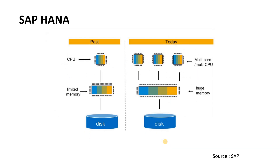This is the simplified version of the previous slide. Earlier we had limited memory, limited disk, and limited CPUs. Over time, CPUs and memory have become cheap, and with SAP HANA we can leverage huge memory and multiple CPUs, achieving phenomenal performance. That's why SAP HANA is a core strategy for SAP — all SAP systems will eventually use SAP HANA as their database, with no other database supported going forward.